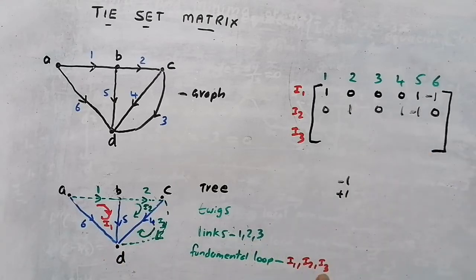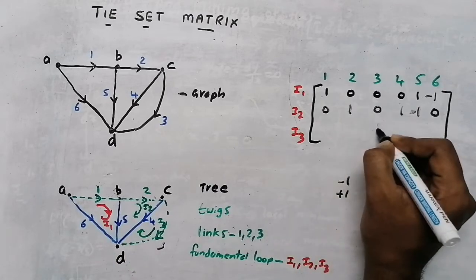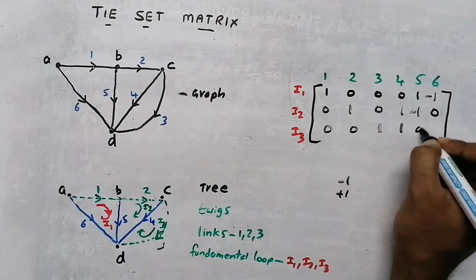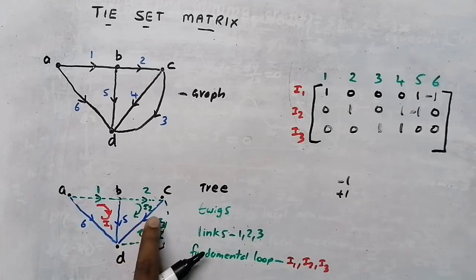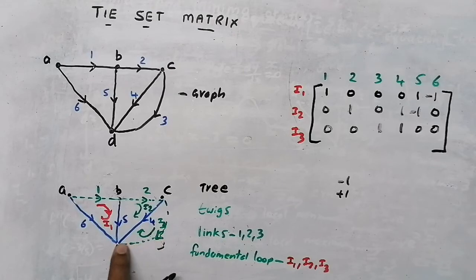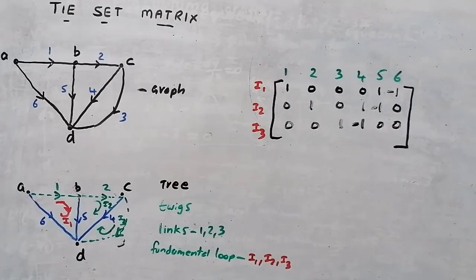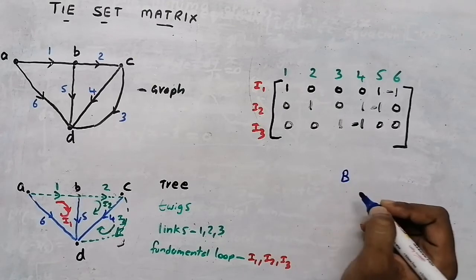Now take the third loop, I3. Which branches are connected? Branch 3 and branch 4. So near 3 and 4 we put 1; remaining are 0. I3 is going clockwise, but branch 4 is in the anticlockwise direction — opposite to I3 — so for branch 4 we put negative 1. This completes our tie-set matrix, denoted by capital B, with loops as rows and branches as columns.